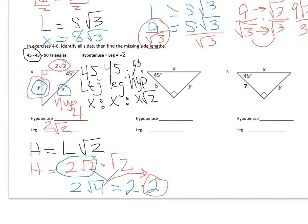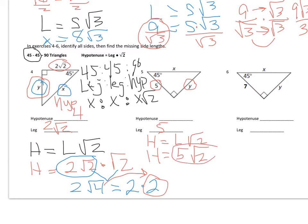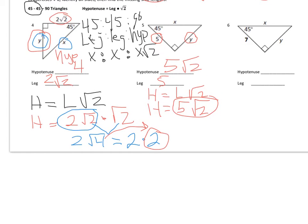Let's do number 5, another 45-45-90. They give us a leg of 5. Y is the other congruent leg, so Y equals 5. The hypotenuse X equals the leg times √2, so we plug in 5 for the leg: X equals 5 times the square root of 2. Now you do number 6 yourself, and I will grade it.